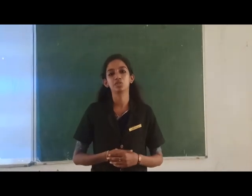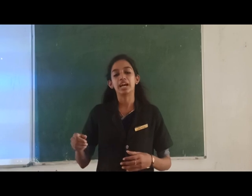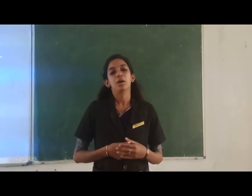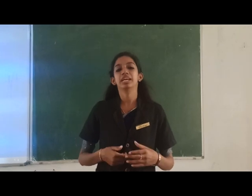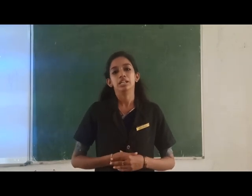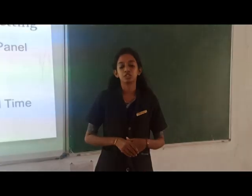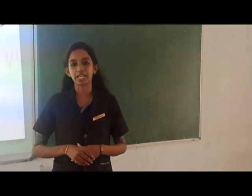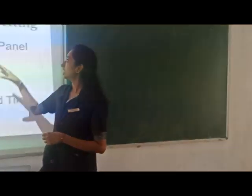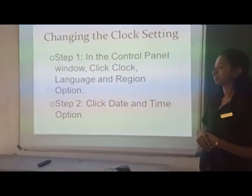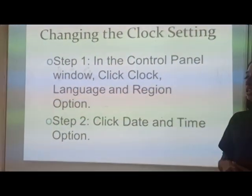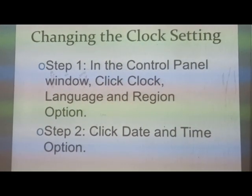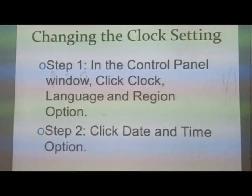Now we are going to see how to change the date and time using the control panel. So let's see what are the steps to follow for setting date and time. Changing the clock setting — write down in your file. Step 1: In the control panel window, click the Clock, Language and Region option.